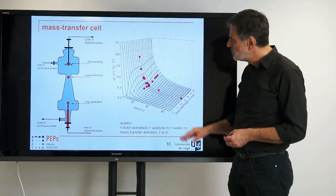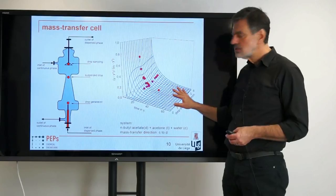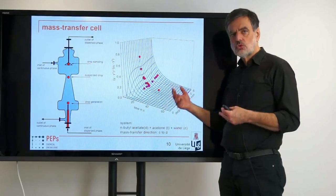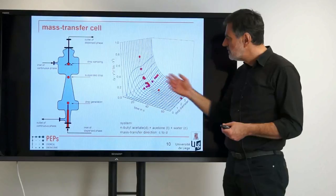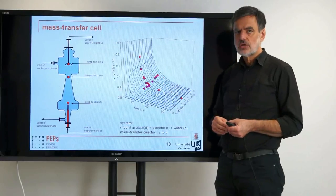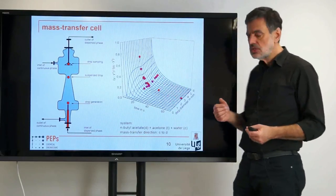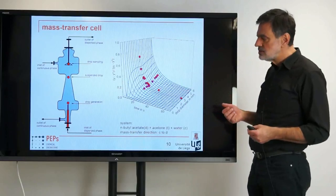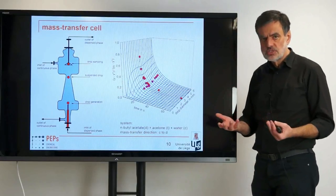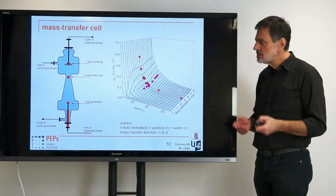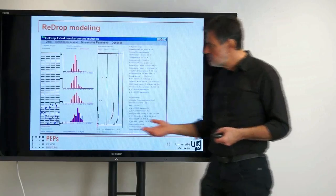You see the data that we produce and you see the model represented by this net, for which we fit a parameter to the data. Then we take these models and other models — also based on single drop measurements — that we plug into our simulation tool, which allows us to describe how the entire extraction column works.